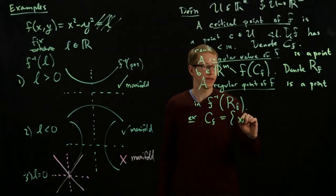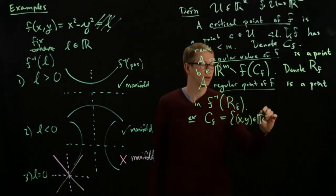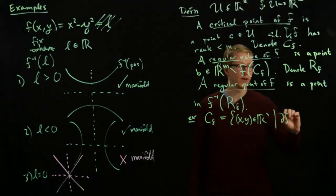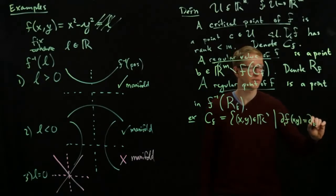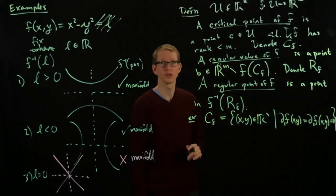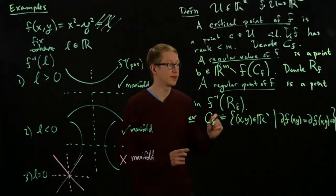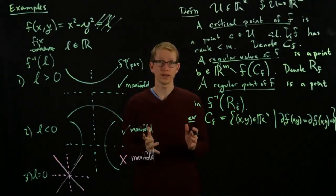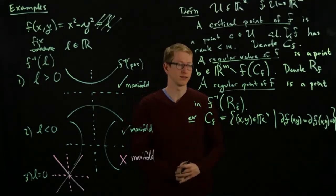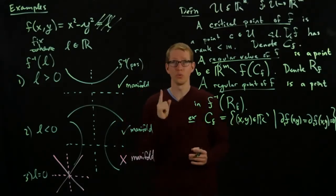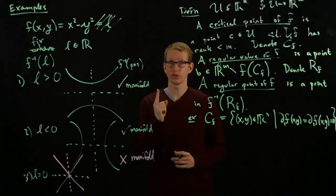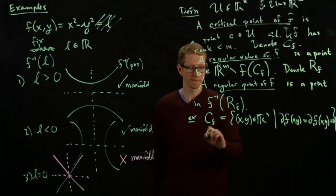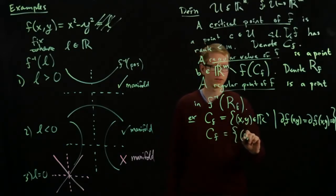equals the set of points x, y in r2 such that the partial derivative of f in the first direction at x, y and the partial derivative of f in the second direction both equal 0. So if both partial derivatives are 0, then that's a critical point. The partial derivatives here are easy. It's just 2x in the first slot, negative 2y in the second slot. So that gives us only one critical point, and the only critical point is 0, 0. So cf is only the point 0, 0.